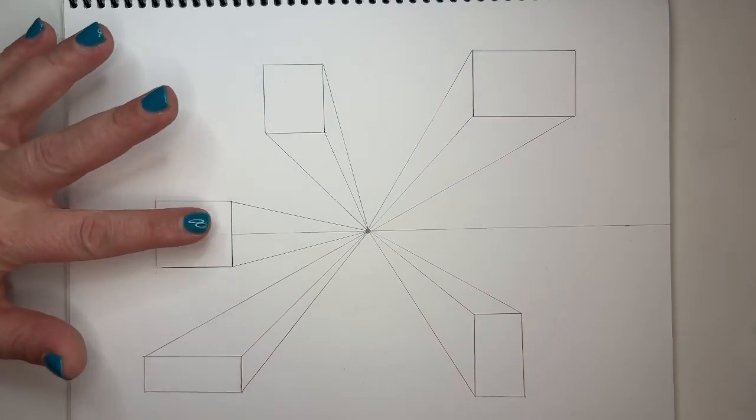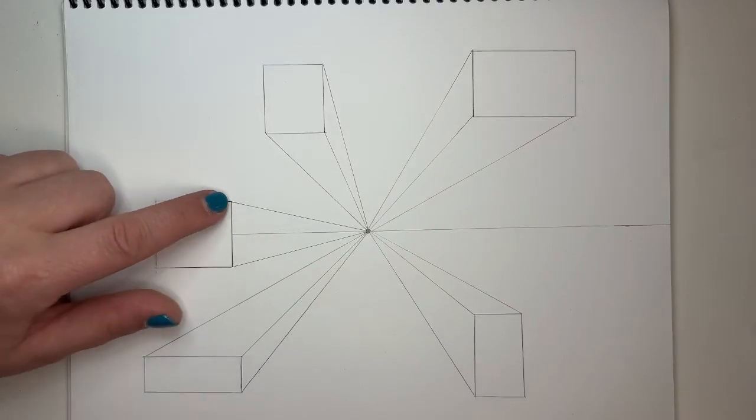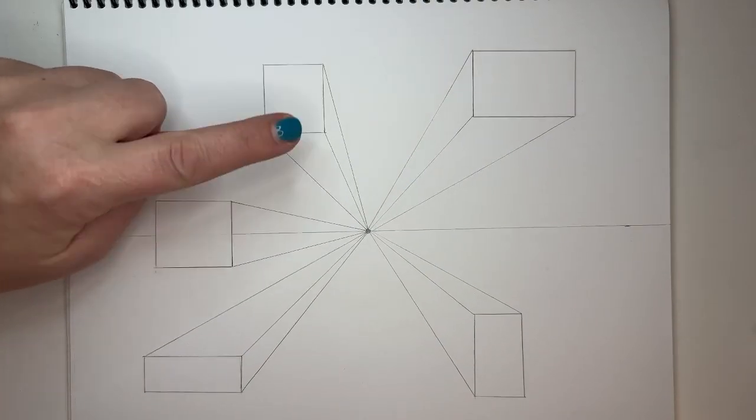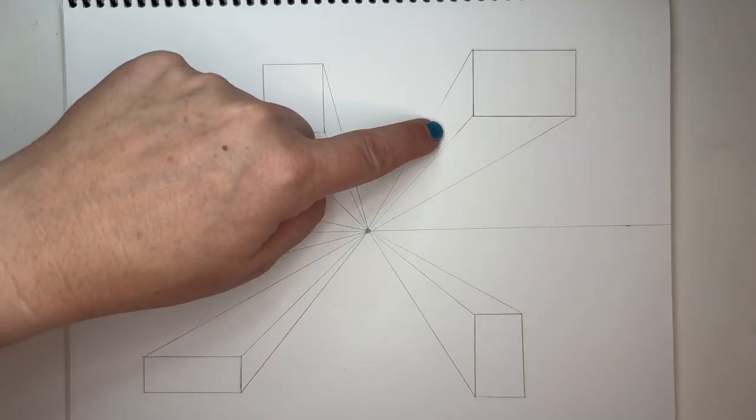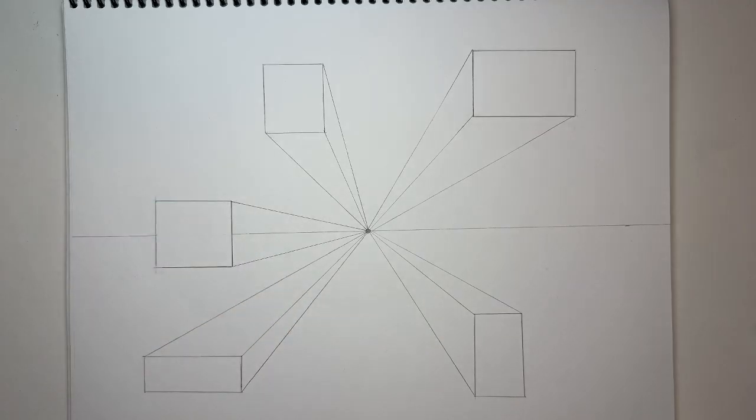So the important thing to know is when you have a shape that's directly over the horizon line, you will only see one side of it. Whereas these shapes up here, these forms, we are going to be able to see a bottom and a side on each of these. And then down here, we'll be able to see a top and a side. So let's go ahead and make that a little bit more visible by trimming these up.